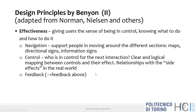Norman's second group of principles is effectiveness: users should be able to perform useful actions and reach their goals. If a website has many sections and functionalities, you should be able to move between them quickly, understand where you are, and find your way to other sections easily. This has to do with menu systems, navigation, breadcrumbs, consistent labeling of sections, and so on.